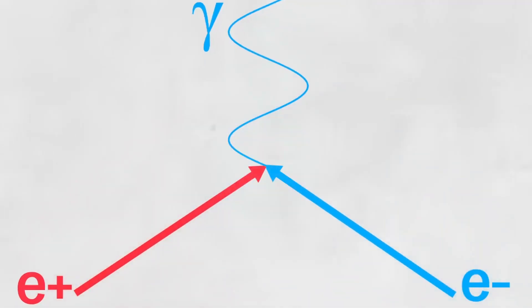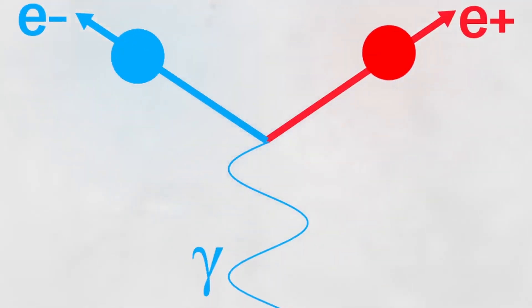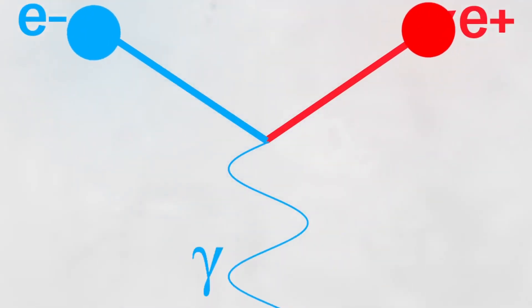The two particles annihilate each other in a process known as annihilation, and this illustrates pair production, where a photon splits into an electron and its antiparticle, a positron.